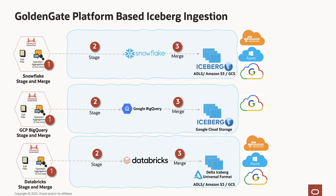GoldenGate also supports platform-based Iceberg ingestions for Snowflake, Google BigQuery, and Databricks. Starting with GoldenGate for distributed applications and analytics 23.7, you can use existing Snowflake, Google BigQuery, and Databricks stage and merge handlers for ingesting Iceberg table format into these platforms. For Snowflake, GoldenGate uses the standard stage and merge architecture, but writes the target table in Iceberg format into an external storage location of the customer's choice. It's a similar flow for Google BigQuery, where Iceberg tables are created in GCS buckets. For Databricks, GoldenGate creates target tables with a Delta Lake universal format set to Iceberg, and these tables can be read by Iceberg clients.